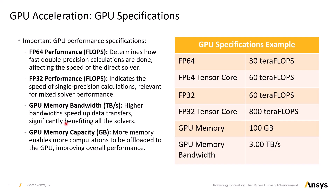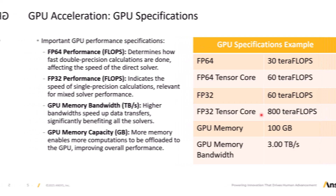And finally, we have memory capacity in gigabytes. More memory enables more computations to be offloaded to the GPU, which improves overall performance. You can find these statistics for GPUs online through websites like Google, Wikipedia, and others.